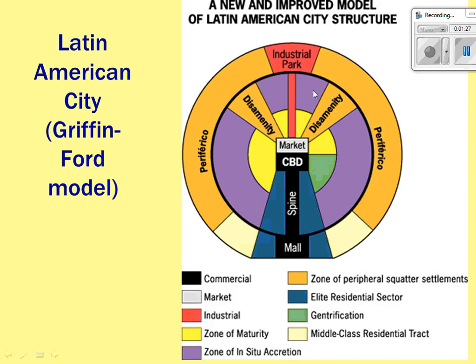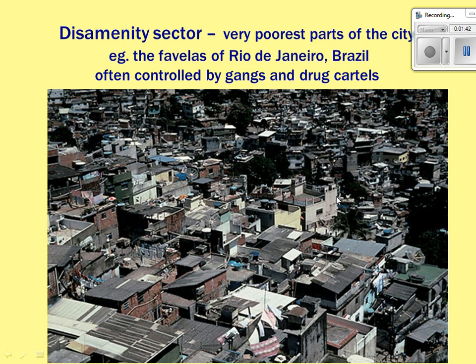The purple area may see growth in the direction of more poor, rich, or middle class depending on the economic structure. A key example is Rio de Janeiro, where the favelas represent the disamenity sector — poor squatter settlements where people build with whatever materials they can find. Law enforcement is weak, so gangs and drug cartels tend to rule that area of the city.